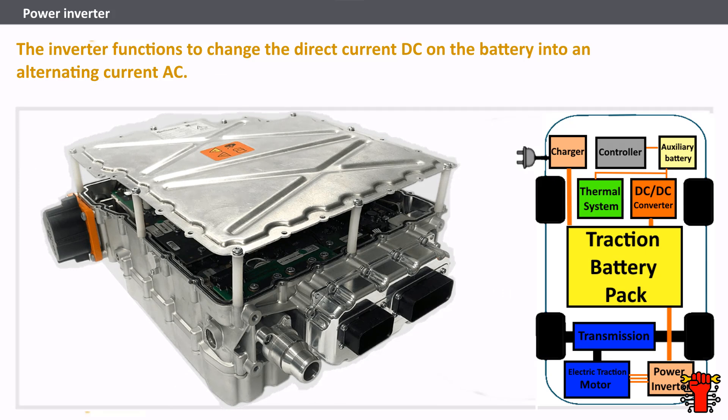The power inverter functions to change the direct current (DC) from the battery into alternating current (AC), which is then used by the electric motor. In addition, the inverter on an electric car also functions to change AC current during regenerative braking back to DC current, which is then used to recharge the battery. The type of inverter used in some electric car models is the bi-directional inverter.